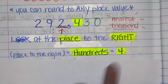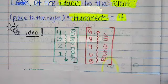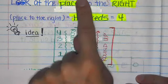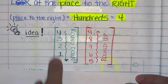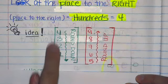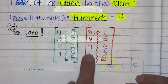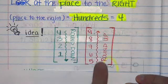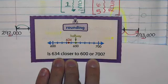Our bossy number is 4 — the number to the right of the thousands place, which is in the hundreds place. Here's the idea: if your bossy number is 4 or smaller — so 4, 3, 2, or 1 — you round down. If your bossy number is 5, 6, 7, 8, or 9, you round up to the next place.